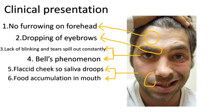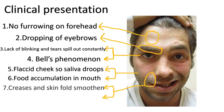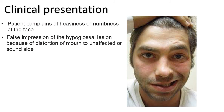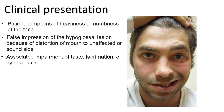There will be dribbling of saliva from the corner of the mouth. Paralysis of the buccinator leads to accumulation of food between the teeth and the cheek. Creases and skin folds of the face become smooth. Retraction of the mouth and pursing of the lips is not possible. The patient complains of heaviness or numbness of the face. Taste is intact. Distortion of the mouth causes the tongue to deviate to the sound side when protruded, giving a false impression of a hypoglossal lesion. Depending on the site of lesion, there may be associated impairment of taste, lacrimation, or hyperacusis.